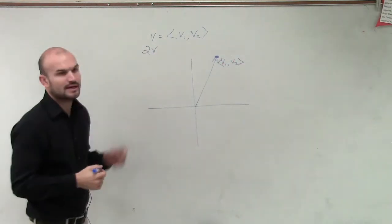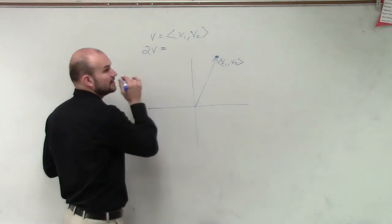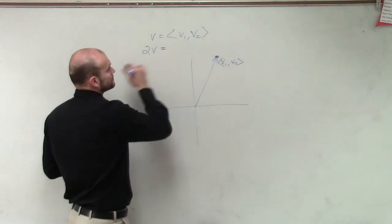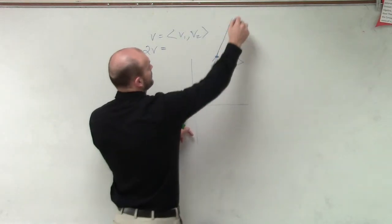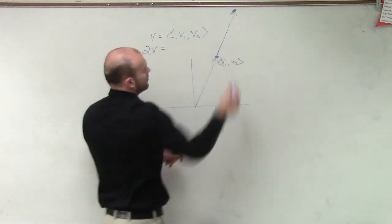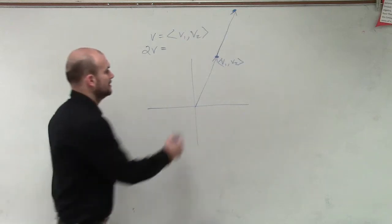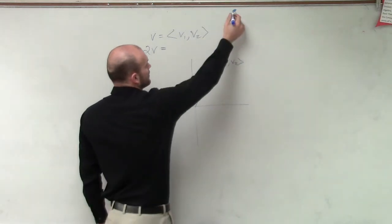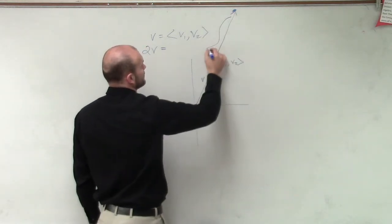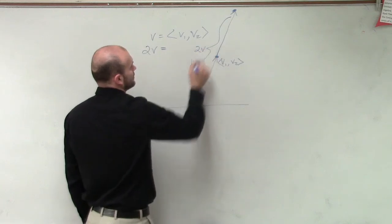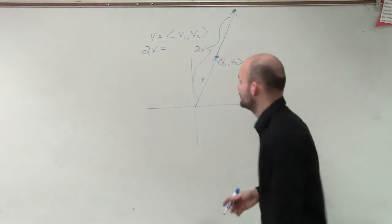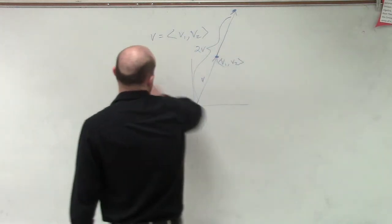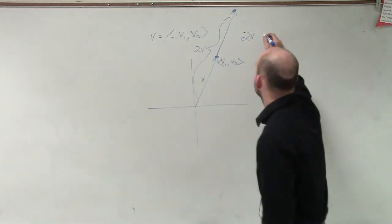Well, if I want to be able to figure out what 2V is going to be, all that simply is going to do is that's going to double that vector, right? If here's V, now this whole long vector is now 2V.